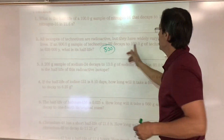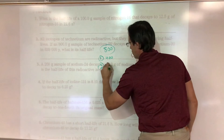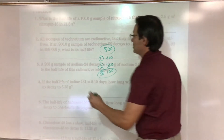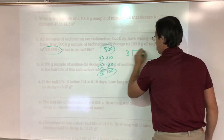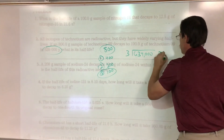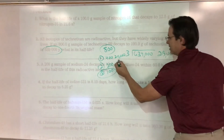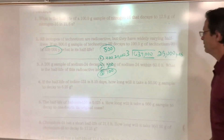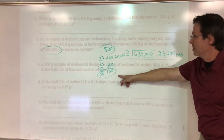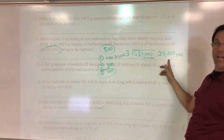One half-life is 400, two half-lives is 200, three half-lives brings it to 100. So it's three half-lives. Divide the total time 639,000 years by 3 — that comes out to 213,000 years. The half-life of titanium-99 is 213,000 years. Check: 213,000 times 3 equals 639,000.